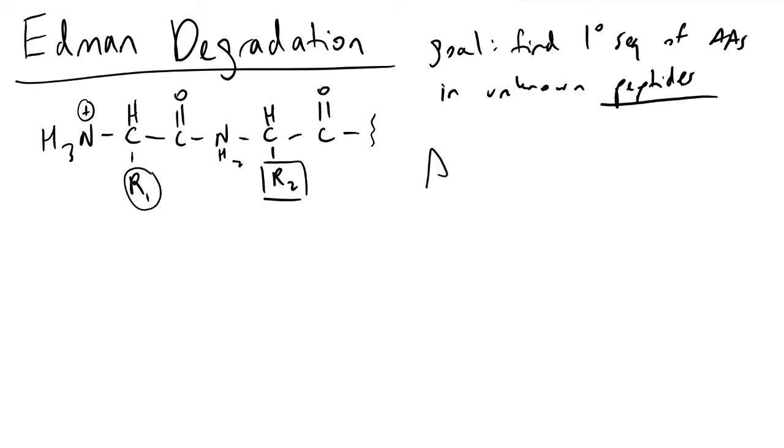The star of the show here is a molecule referred to as phenyl isocyanate. Phenyl isocyanate has the phenyl group here, followed by a nitrogen double bound to a carbon double bound to a sulfur.